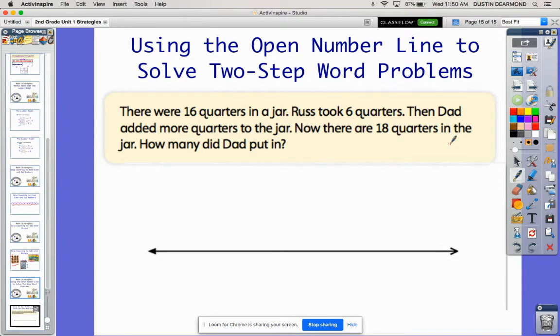There were 16 quarters in a jar. So think about a jar sitting on the counter with some loose change, and there's 16 quarters in it. Russ took six quarters. So he reaches his hand in there and takes out six. Then Dad added more quarters to the jar. Now there are 18 quarters in the jar. How many did Dad put in?